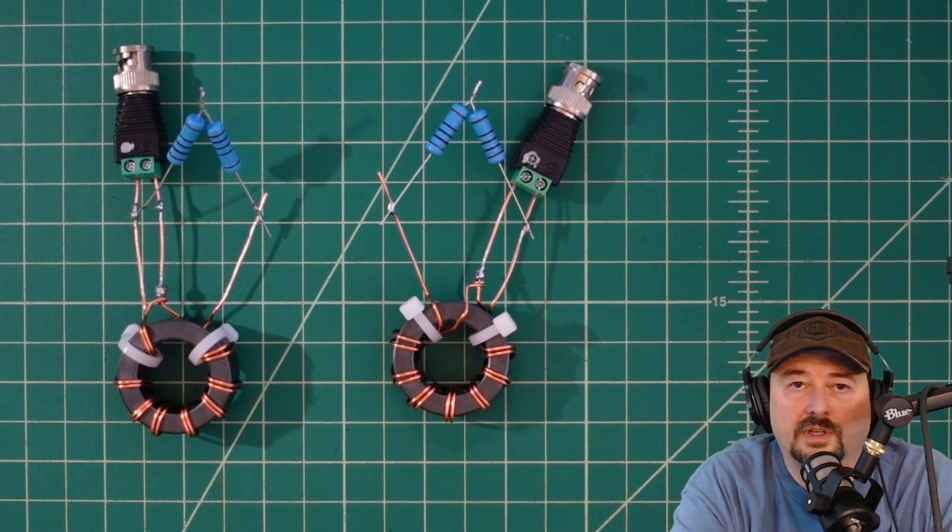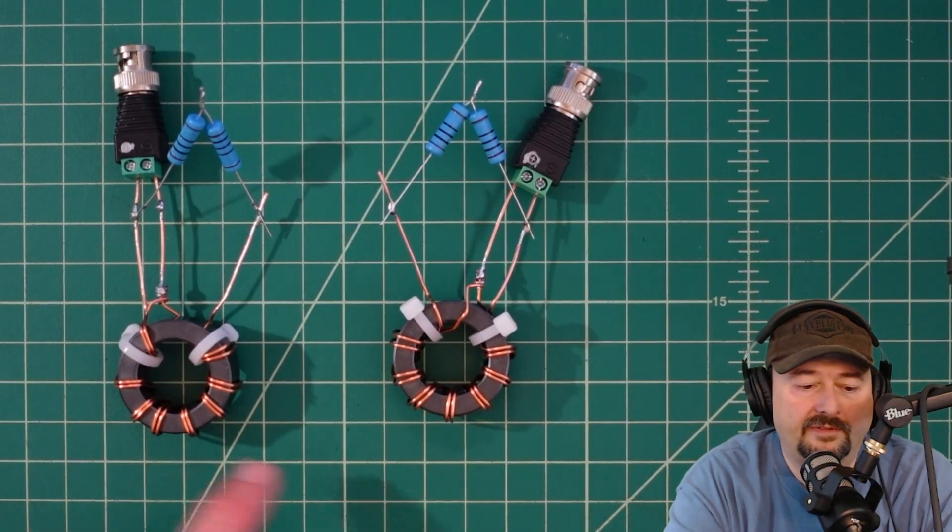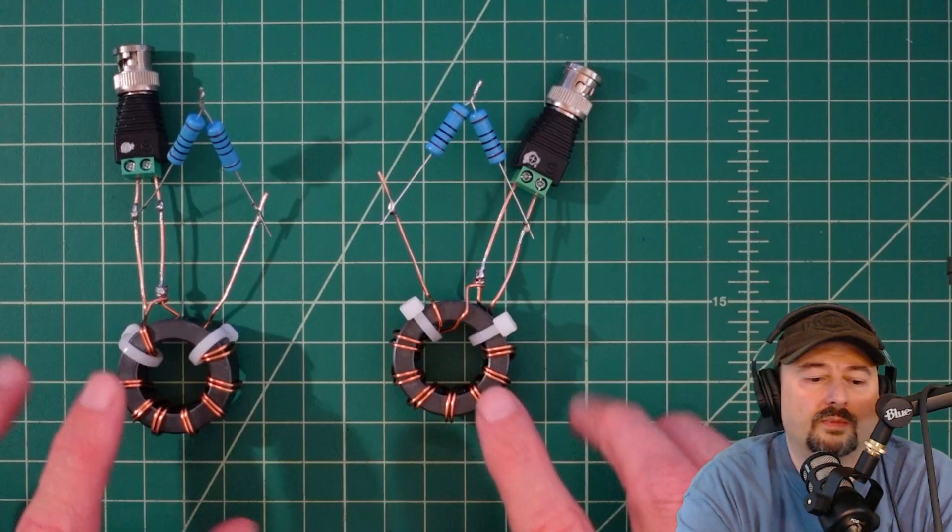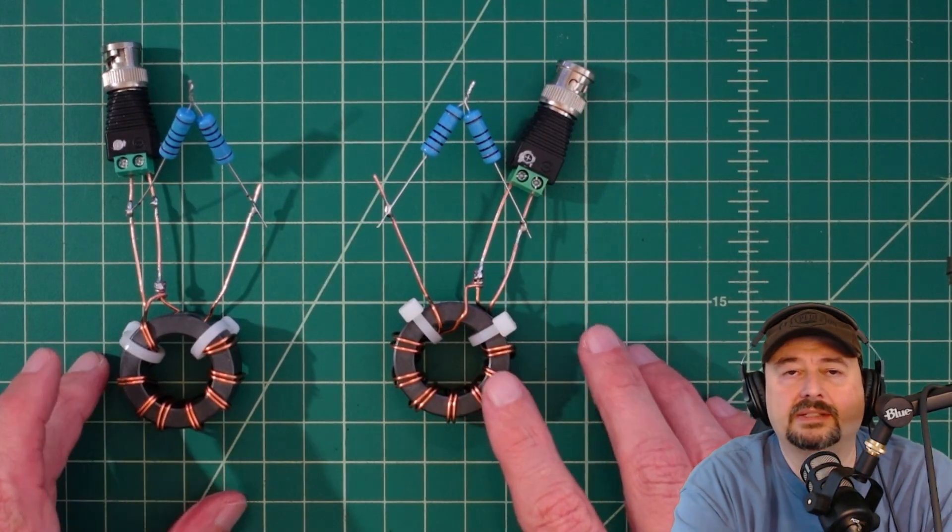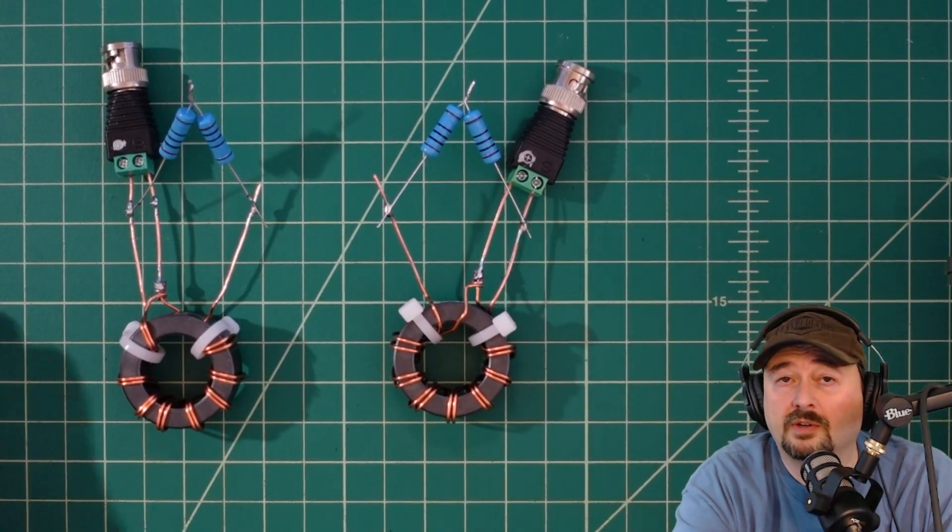All right folks, in this video we're going to talk about baluns and ununs. These are four to one baluns and ununs used when we want to convert impedance from a 50 ohm coaxial cable to a 200 ohm load.